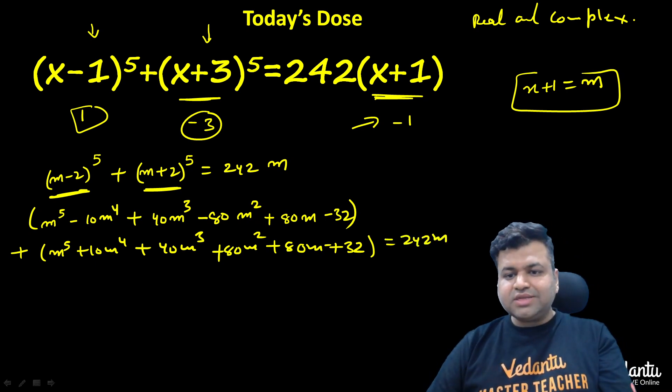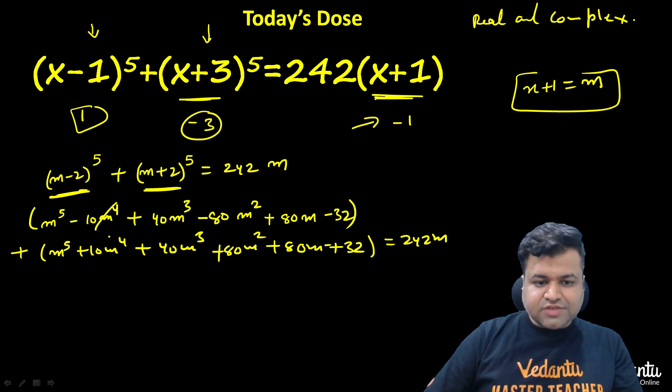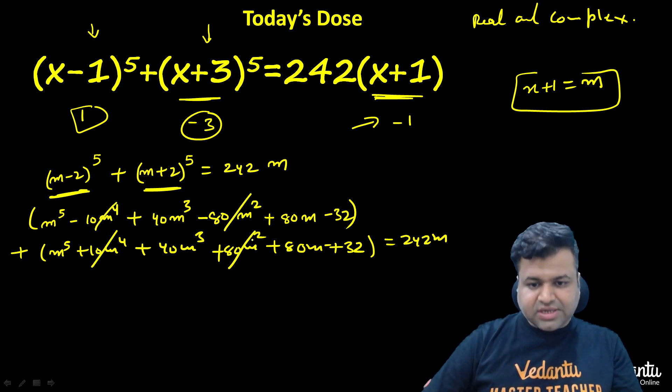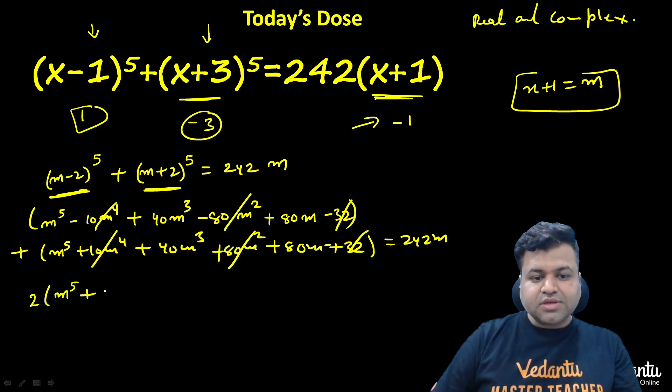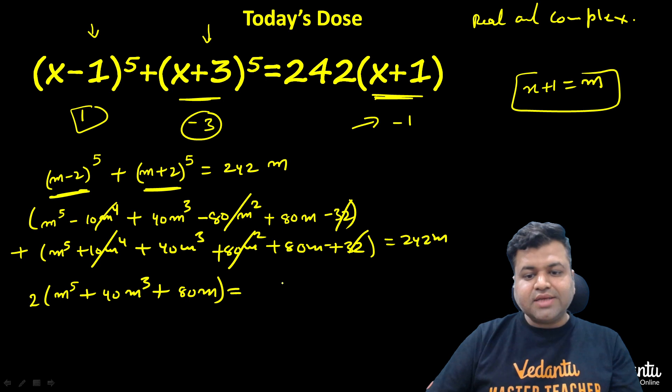Now let's see. When we add them, this will get cancelled out with this, this gets cancelled with this. And we are left with twice of m^5 + 40m^3 + 80m, and that is nothing but equal to 242m.